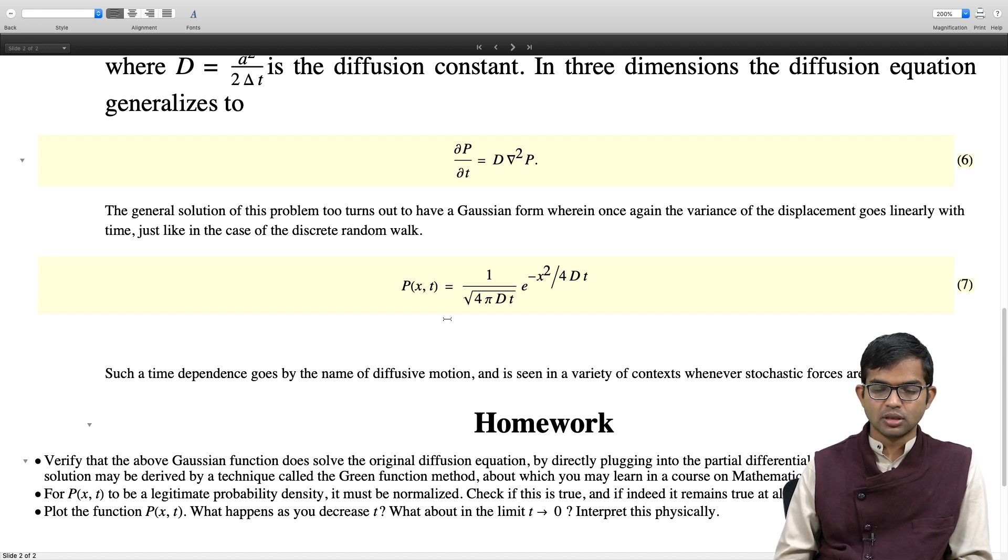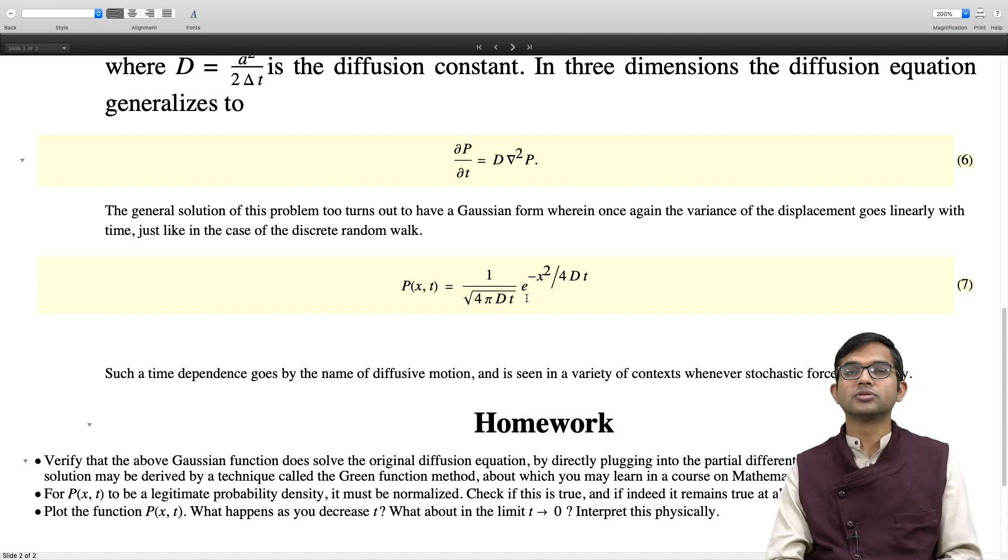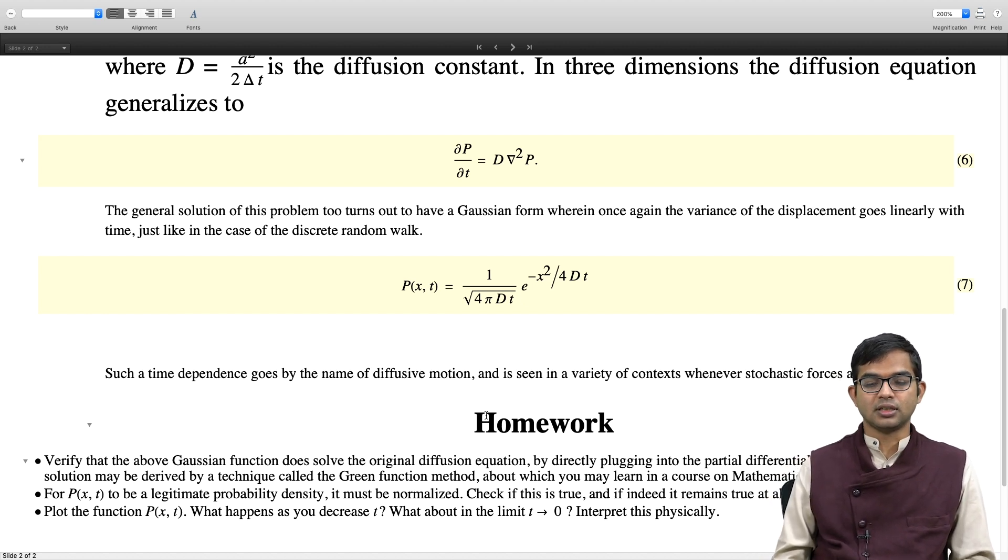Second is to check that this is a legitimate probability density. So integrating over all space, you should check this and it should be normalized. It is over all space. At any given time, the particle has to be at any position in space. And as a function of time, the whole probability distribution will change, but it is not clear that if you integrate over time you are going to get something. So it is an integration over space. And then final thing to do is to make a plot of this and check for yourself what happens as you keep on decreasing time. That is an interesting question to address. And what about in the limit of t going to 0? Is there something very special that will happen? This is something for you to interpret graphically and think about. That is homework.